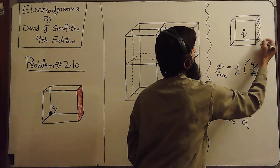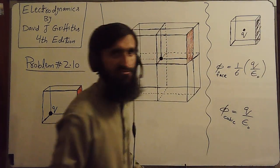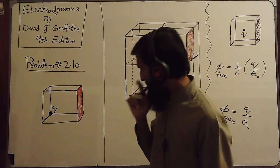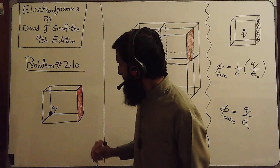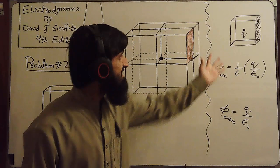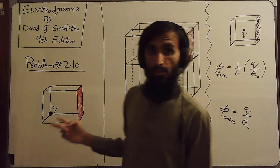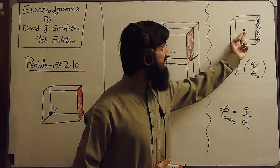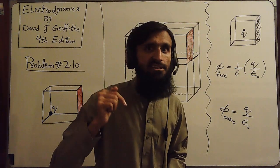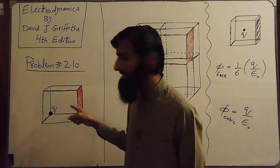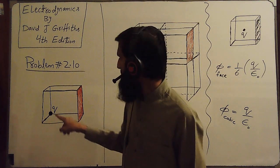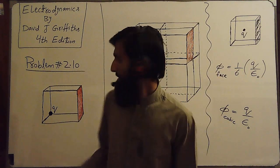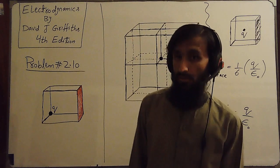Now if we want to find the flux through the shaded face in the original problem, we cannot apply the same concept here, because these two cases are different. In the first case the charge sits at exactly the center of the body, but here the charge is not placed at the center — it is placed at one of its corners. That's why we cannot apply this concept directly.